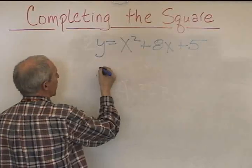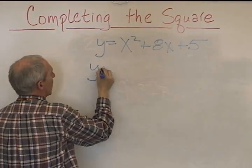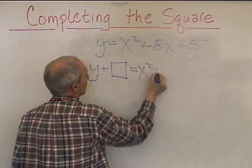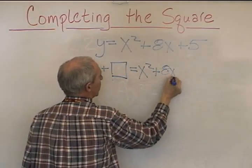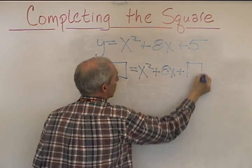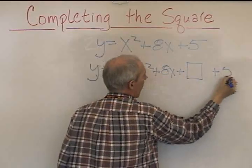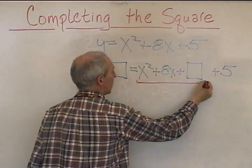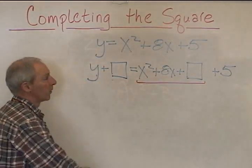All right, this doesn't work by itself. We say y plus something in a box is equal to x squared plus 8x plus something in a box plus 5. Now, what we're going to do is we're going to deal with this part right here, turn it into a perfect square trinomial.